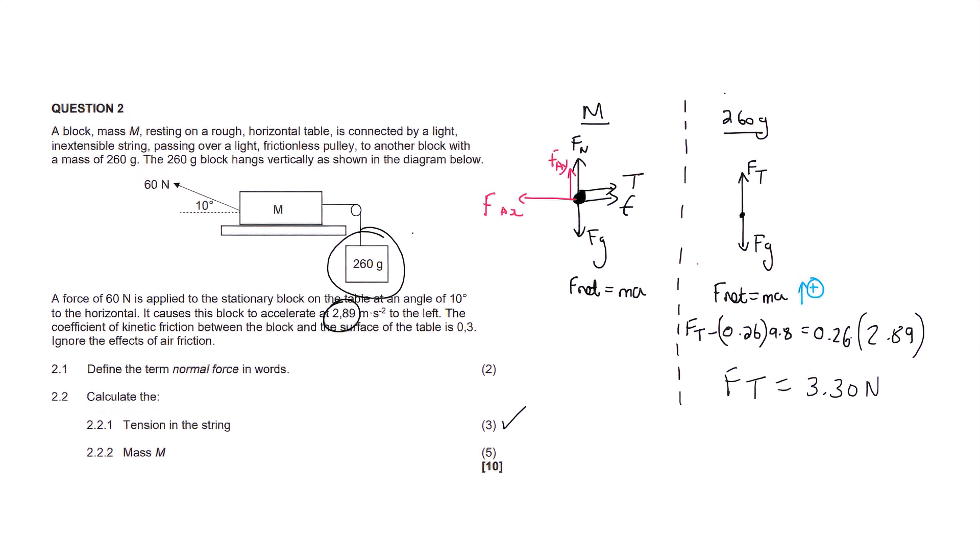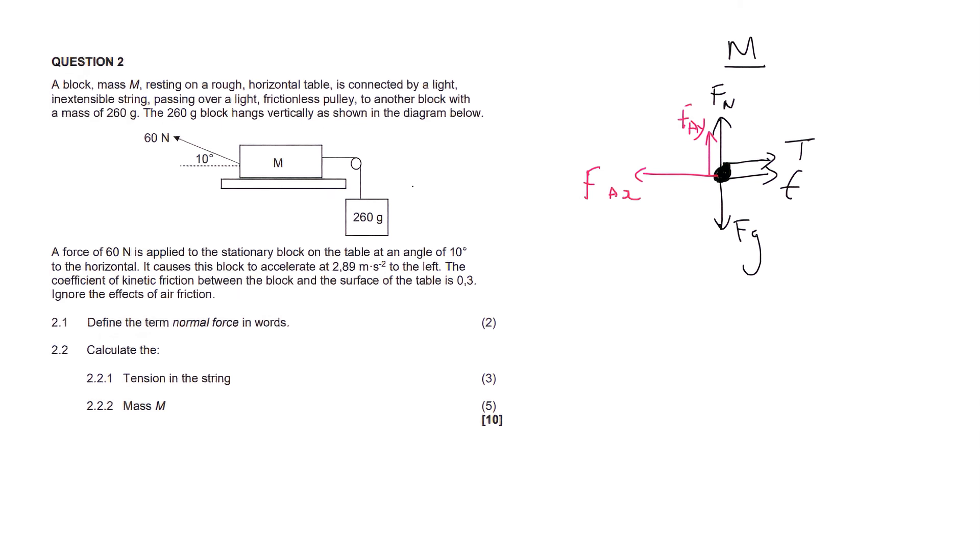But just remember that if they didn't give us acceleration, then this would typically be worth a lot more, and you would have to use F net equals ma on both of these, and then you would do some type of simultaneous scenario. Okay, so for the next question, we have to calculate the mass.